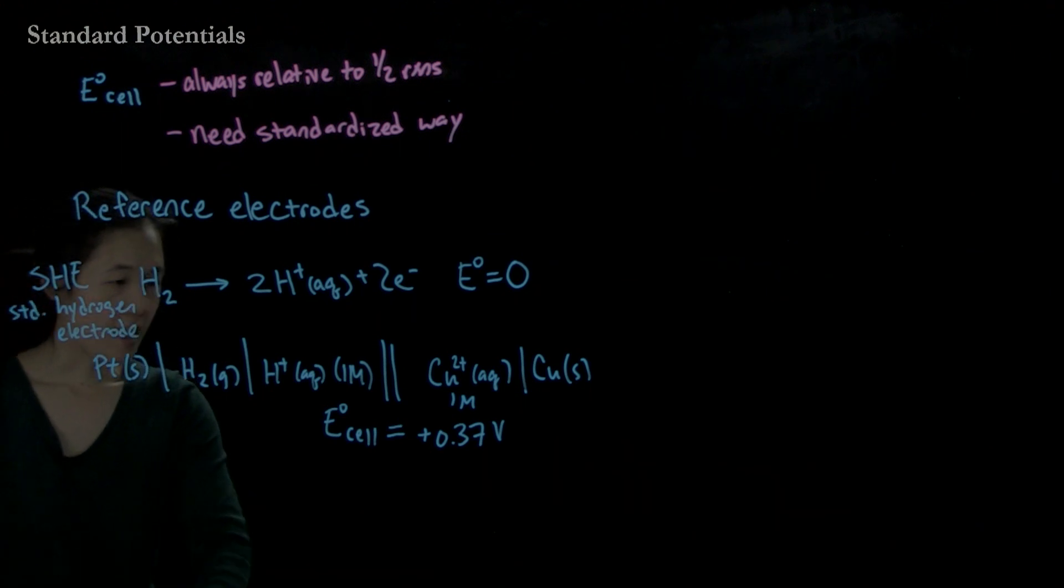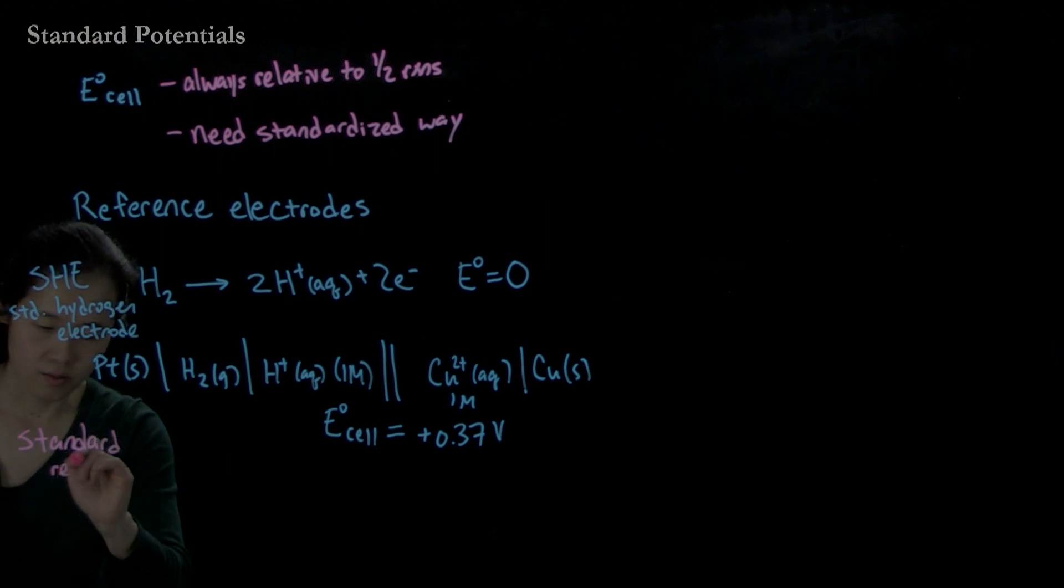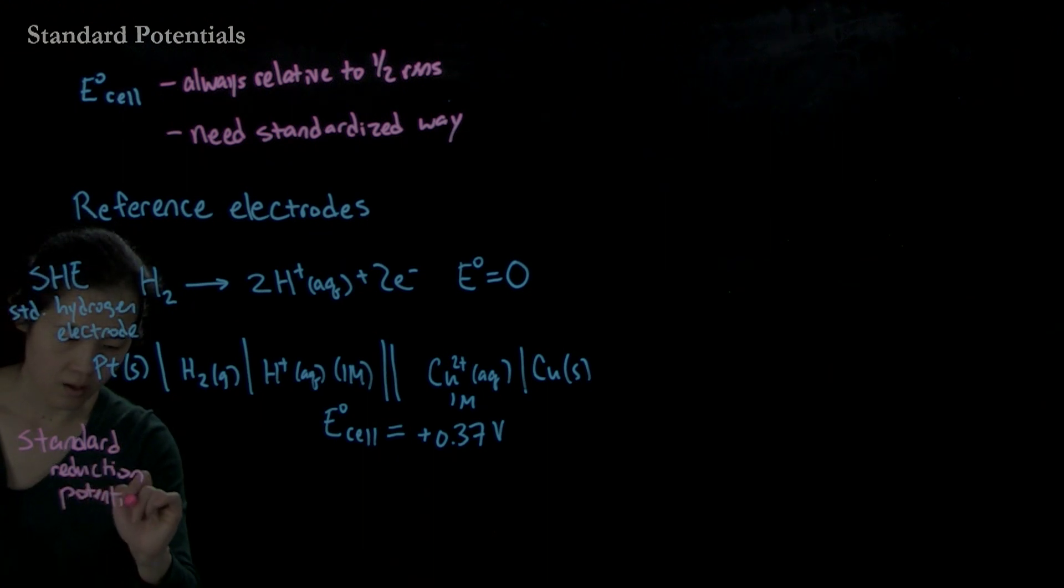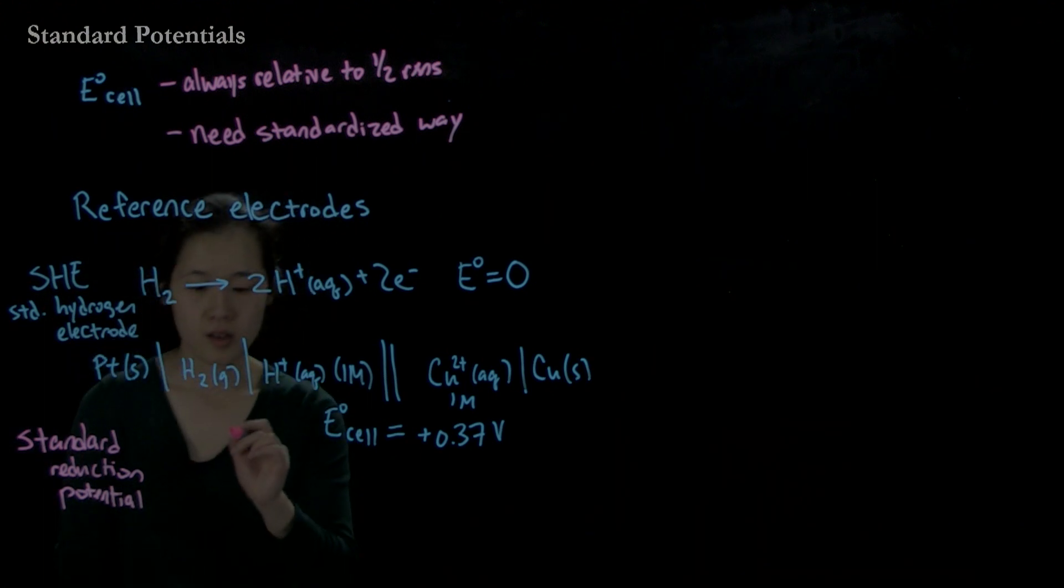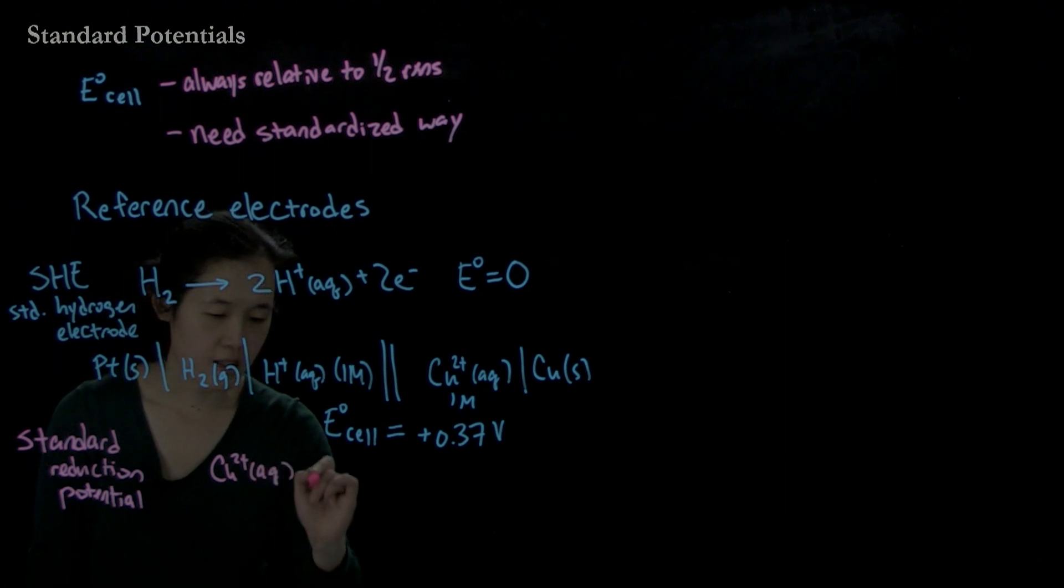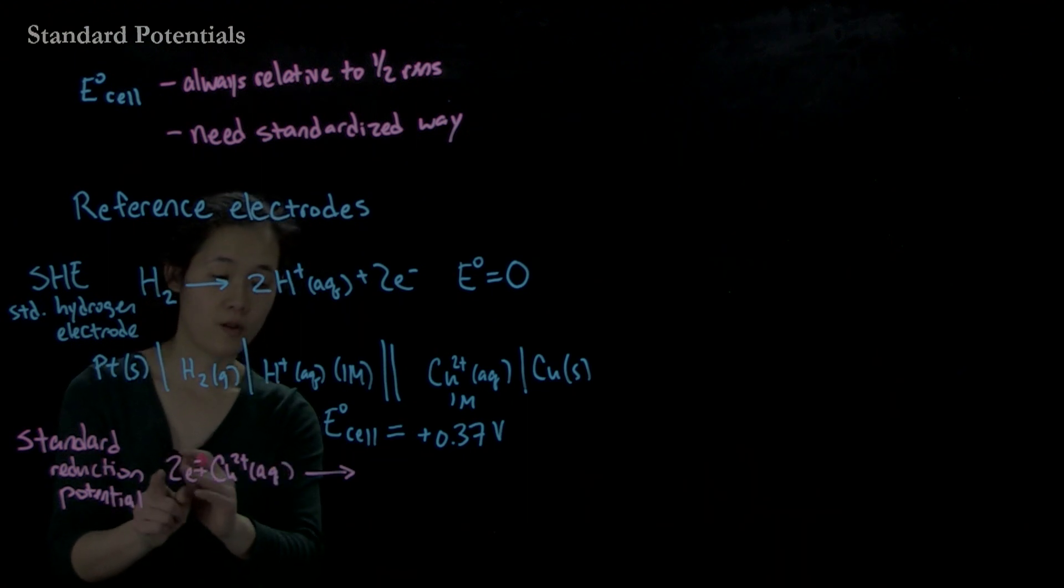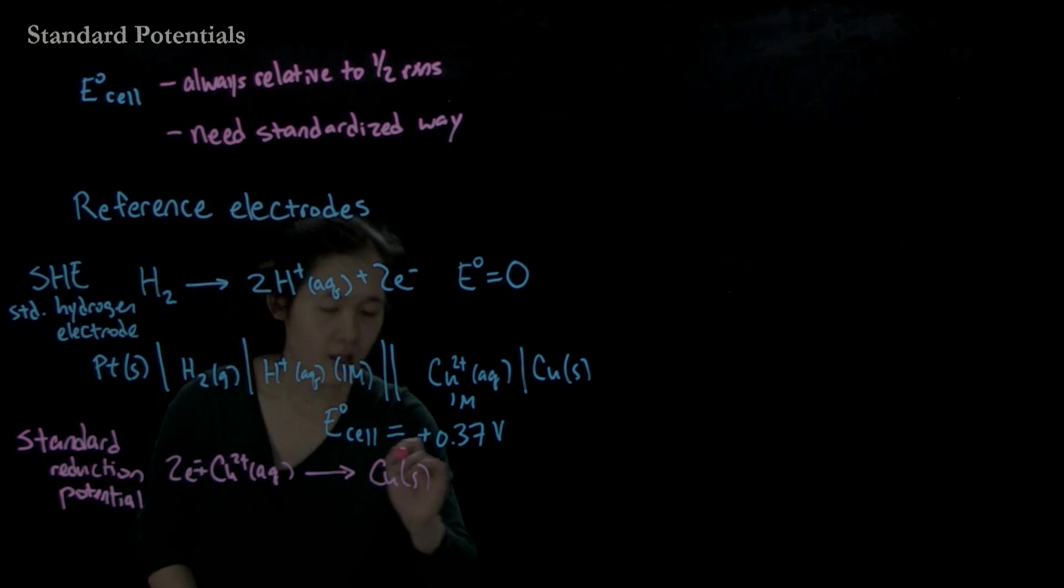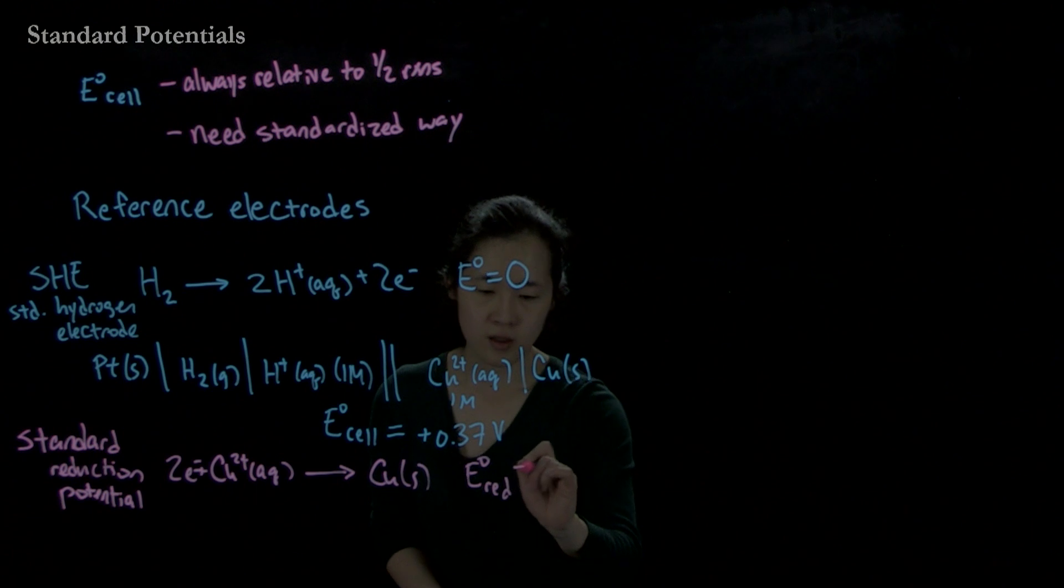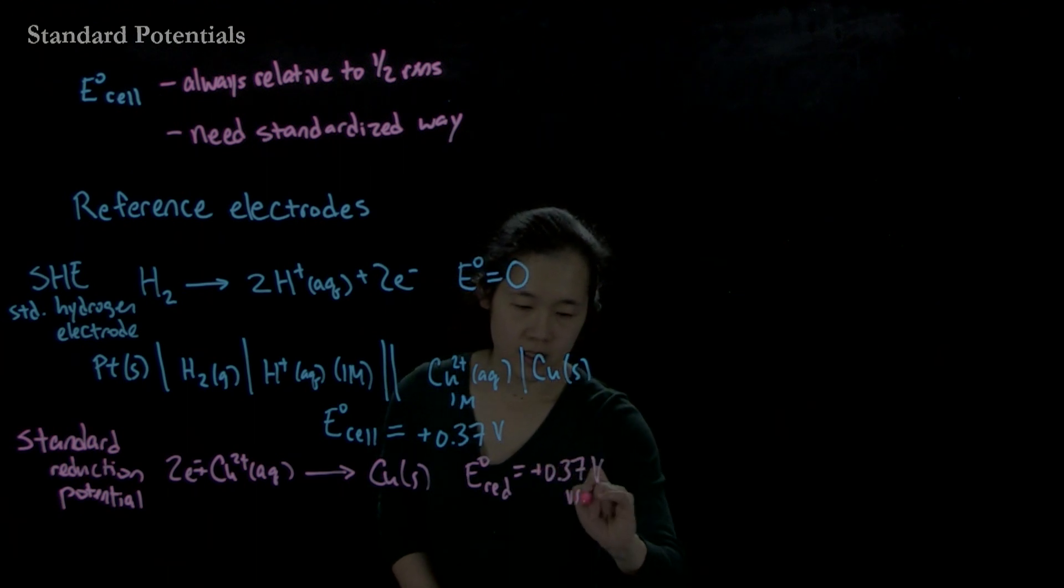We can then define our standard reduction potential of a half reaction. So if we want to know the reduction potential of going from copper 2+ aqueous, adding two electrons - again, this is a reduction because copper is getting reduced by two electrons - going to copper solid. Then our standard reduction potential is going to be equal to +0.37 volts versus SHE.